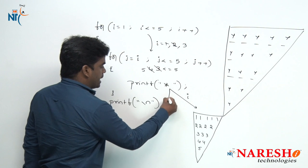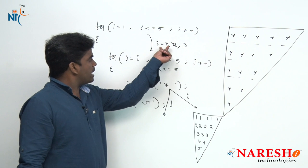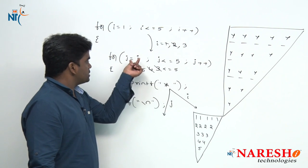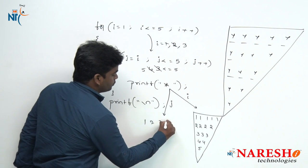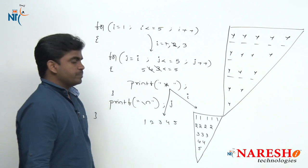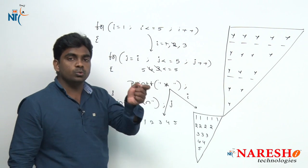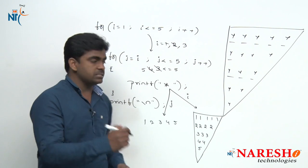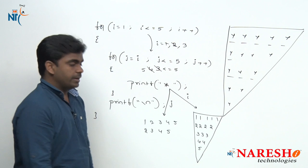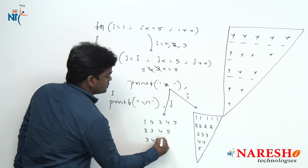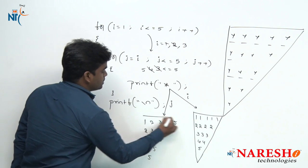Instead of I, suppose you print J value — what will be the pattern? Whenever I equals 1, J starts with 1, so it prints 1 2 3 4 5. Second iteration, I is 2, J starts with 2 — prints 2 3 4 5. I is 3 — prints 3 4 5. Then 4 5, and finally 5. This is the pattern.